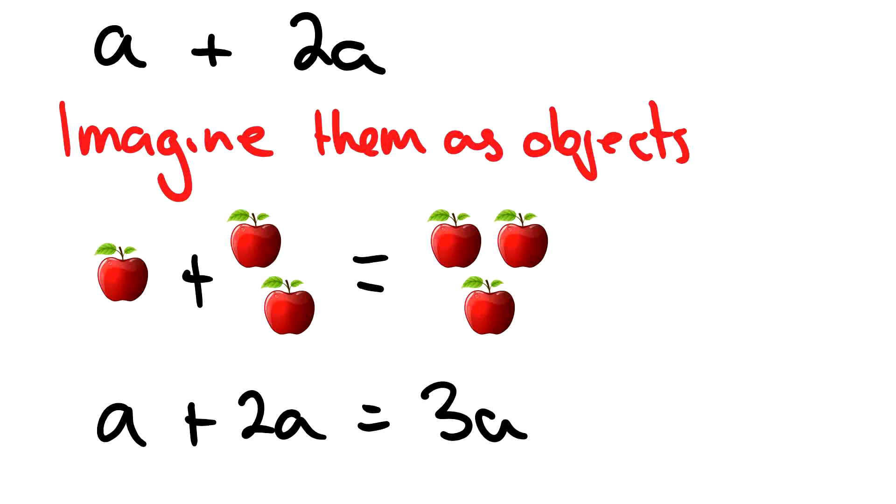It's good to think of them as objects to just help you give a visual understanding of what's going on. If I have an apple, a, plus two apples, I have a total of three apples. So a plus 2a equals 3a. And the way to think of it here is because a represents apples, they're the same fruit. So we can add them together.